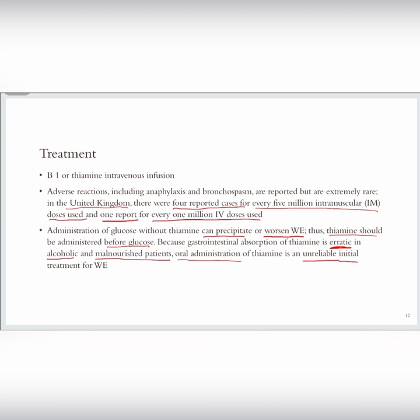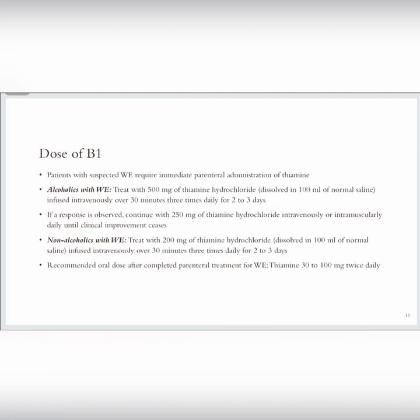Patients with suspected Wernicke encephalopathy require immediate parenteral administration of thiamine. If a patient's history is strongly suggestive of vitamin B1 deficiency, we need to give thiamine infusion urgently. In alcoholics with Wernicke encephalopathy, treat with 500 mg of thiamine hydrochloride dissolved in 100 ml of normal saline, infused intravenously over 30 minutes, three times daily for two to three days. If there is a response, continue with 250 mg of thiamine IV or IM daily until clinical improvement ceases.